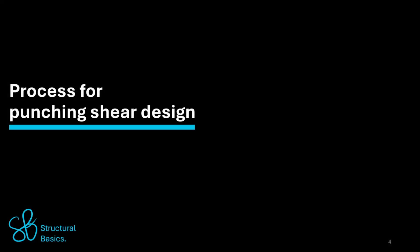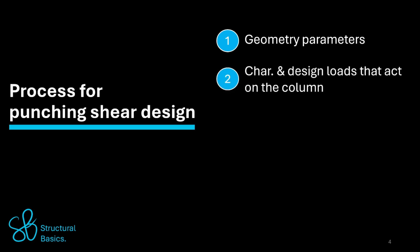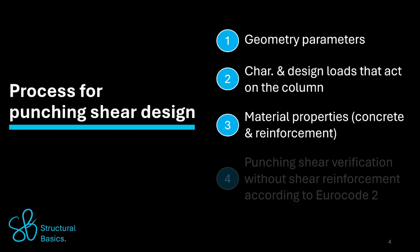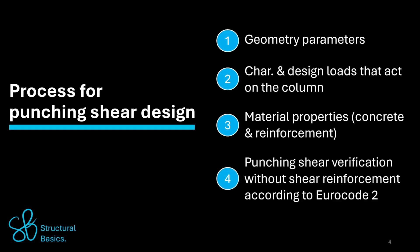Let's continue with the step-by-step process to design for punching shear. First, I define geometry properties of the slab and column. Second, we calculate characteristic and then design loads that act on the column. Then we define material properties of the slab and column, like diameter of the longitudinal reinforcement and concrete strength. Finally, we'll do the punching shear verification without shear reinforcement according to Eurocode 2.